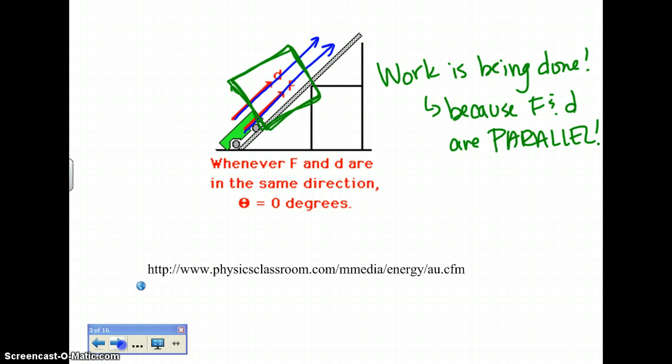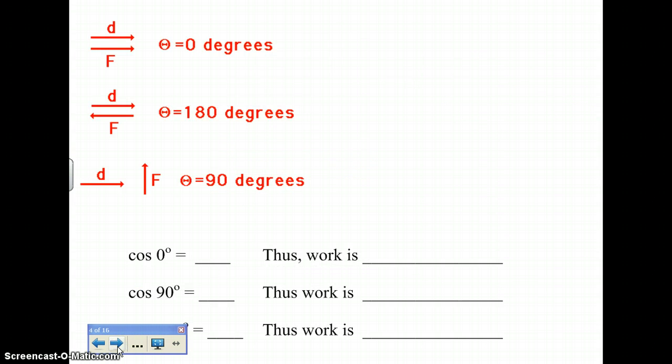Okay, so in other words, what we really want to look at here is that cosine of theta needs to be zero degrees. And if cosine zero, like put it in your calculator, cosine zero comes out to be one. Therefore, work is done. But what about cosine of 90? Cosine of 90 would imply that they are working perpendicular to each other. If you put cosine 90 in your calculator, you get zero. Therefore, work is not done. It's going to equal zero joules in that scenario.